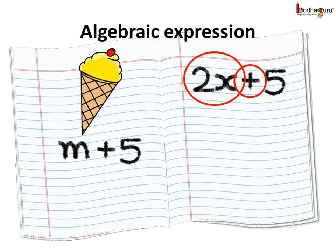You know, when an expression consists of variables, then that expression is called algebraic expression. Like here, m plus 5. In the algebraic expression, variables and the constants are connected by the arithmetic operators, like here, the variables m and 5 are connected by plus.